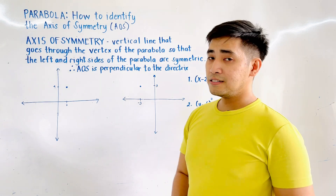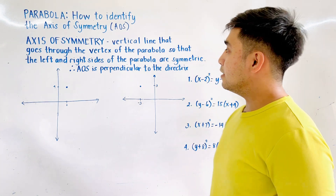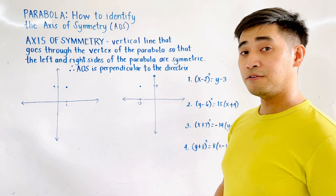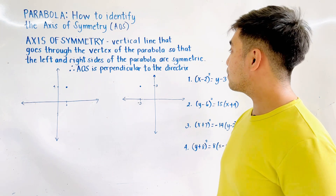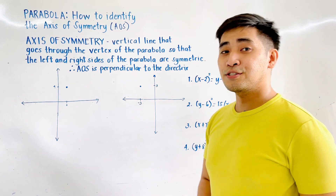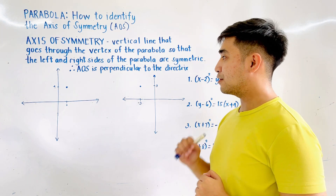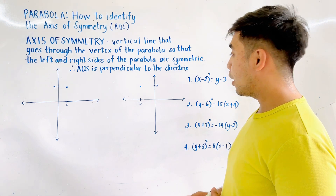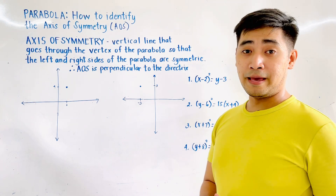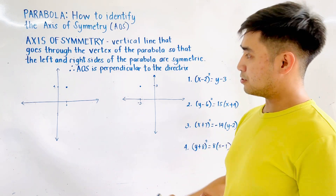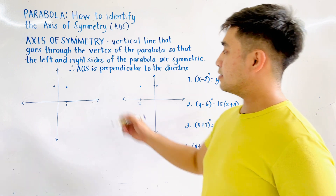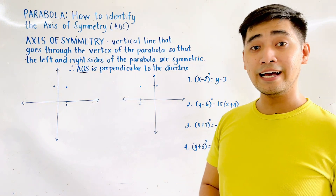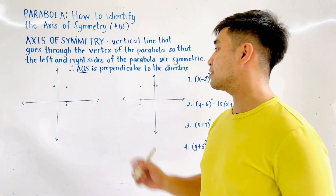The axis of symmetry is the vertical line that goes through the vertex of the parabola so that the left and the right sides of the parabola are symmetric. Also, the axis of symmetry is perpendicular to the directrix.